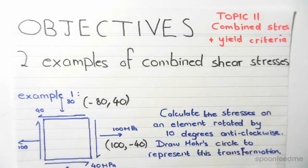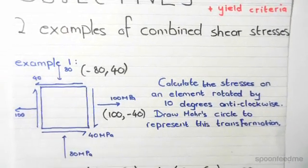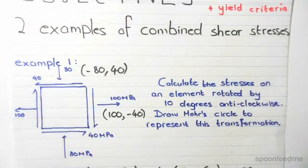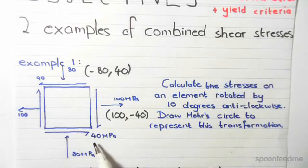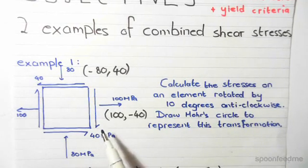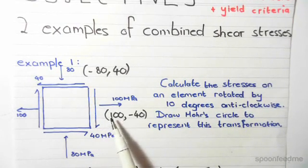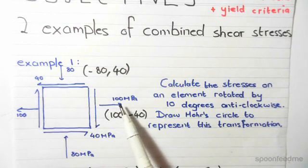The following is an example of combined shear stresses. So let's say we have this element over here. It has a shear stress of 40 MPa, a normal stress of X, and horizontal normal stresses of 100 MPa.